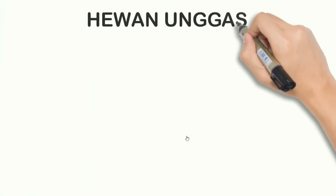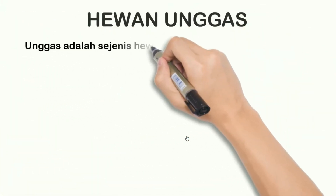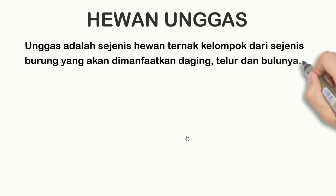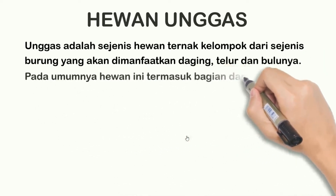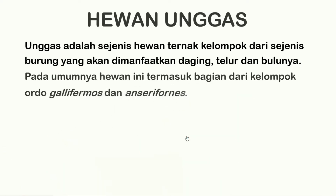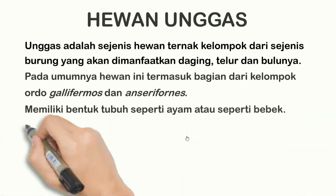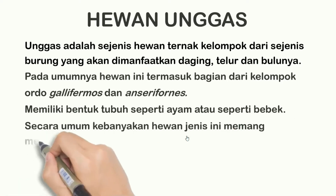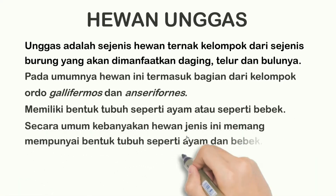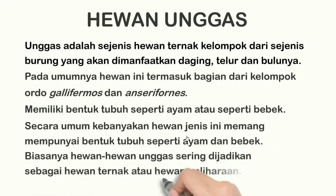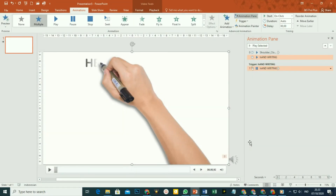Hewan Unggas. Unggas adalah sejenis hewan ternak kelompok dari sejenis burung yang akan dimanfaatkan daging, telur, dan bulunya. Pada umumnya, hewan ini termasuk bagian dari kelompok Ordo Gallifermus dan Ancyreformus. Memiliki bentuk tubuh seperti ayam atau seperti bebek. Kebanyakan hewan jenis ini memang mempunyai bentuk tubuh seperti ayam dan bebek. Biasanya hewan-hewan Unggas sering dijadikan sebagai hewan ternak atau hewan peliharaan. Itu tadi contoh yang dilengkapi dengan narasi menggunakan sumber suara dari Google Translate.